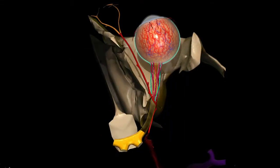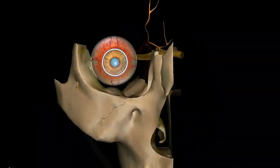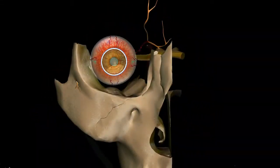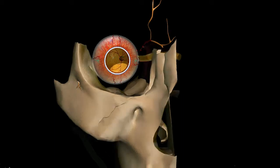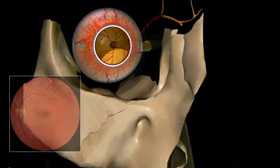The retinal branches are visible on fundoscopy, and you can see from this view an approximation of what these retinal branches would look like.